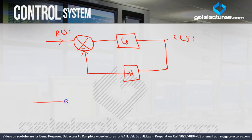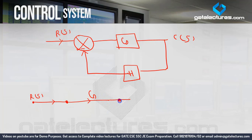So what do we do? The input R(s) is shown as a node. The adder is also indicated by a node. The gain is indicated by an arrow, which also indicates the takeoff point as another node. Then the output C(s) will be represented as a node.